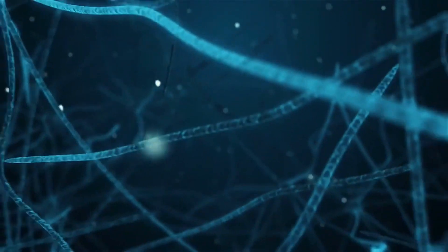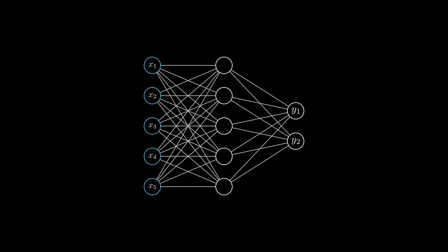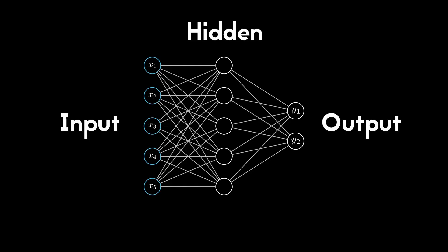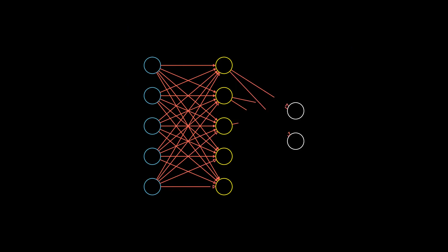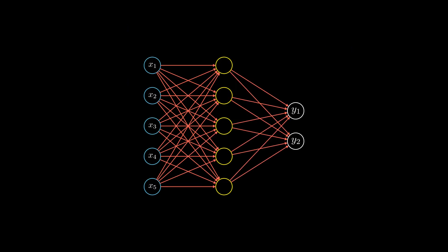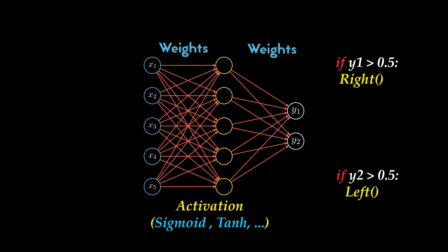Neural networks refer to systems of neurons, either organic or artificial in nature. It is a collection of node layers containing an input layer, one or more hidden layers, and an output layer. In our case, we have five input nodes — our sensors — and two output nodes, which decide whether the car should go right or left. Each node connects to another and has an associated weight and threshold. If the output of any individual node is above the specified threshold value, that node is activated using an activation function, sending data to the next layer of the network. Otherwise, no data is passed along to the next layer.